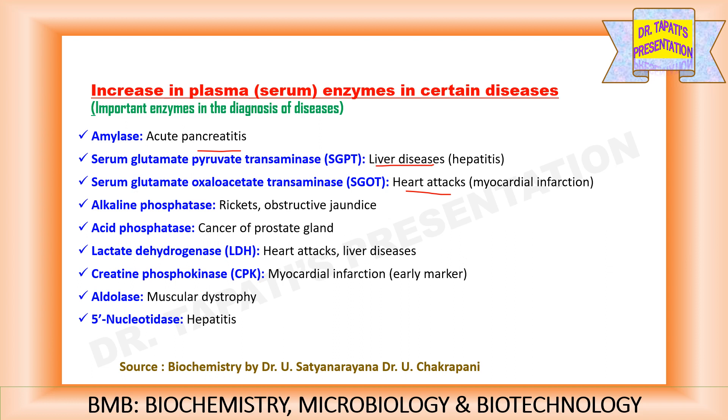5'-nucleotidase is the indicator of hepatitis. Increased level of GGT is the indicator of alcoholism.